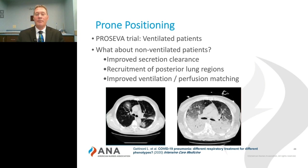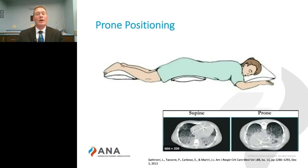In the supine position, gravity causes fluid to pool in the posterior surfaces of the lungs, collapsing those alveoli. Gravitational perfusion also goes to the posterior section where those alveoli are already collapsed, so you're getting perfusion to lung fields that aren't open. Turning the patient over to the prone position facilitates opening those collapsed alveoli in the posterior regions while perfusing the anterior portion where alveoli are already open. We support the pelvis and chest area while allowing the abdomen to hang freely, which facilitates better diaphragm expansion and therefore lung expansion.